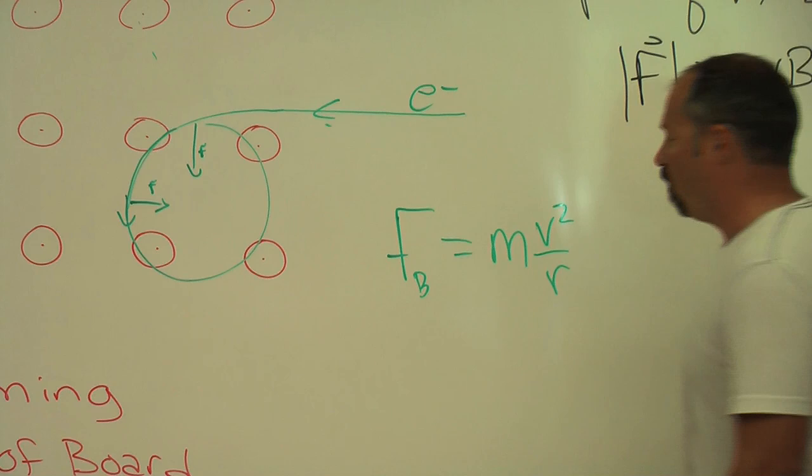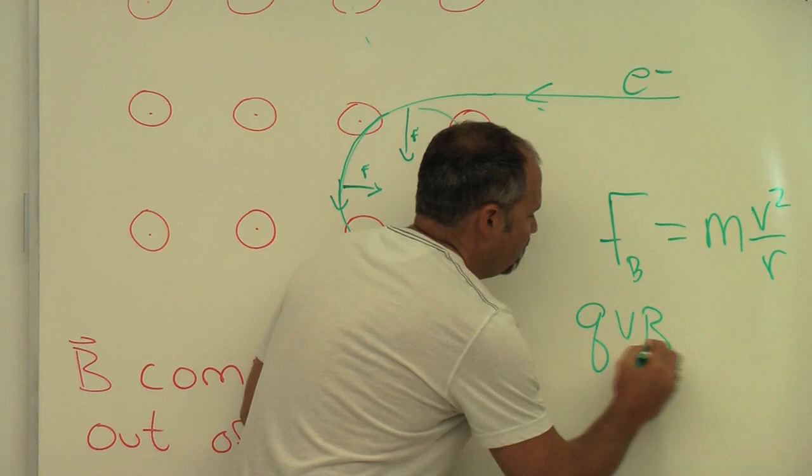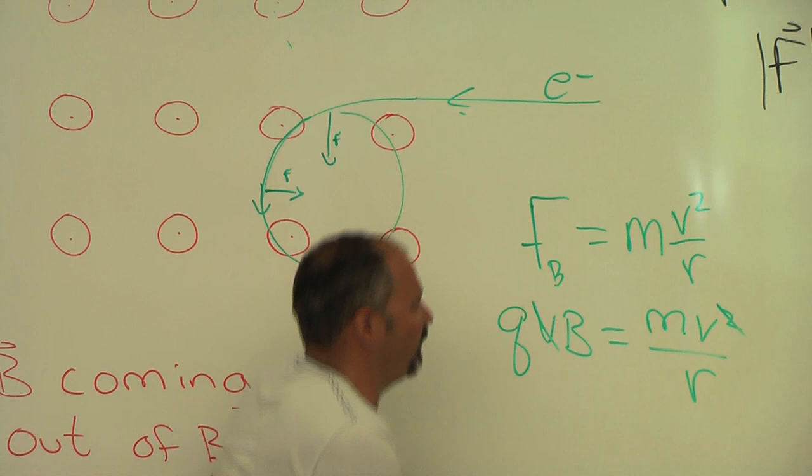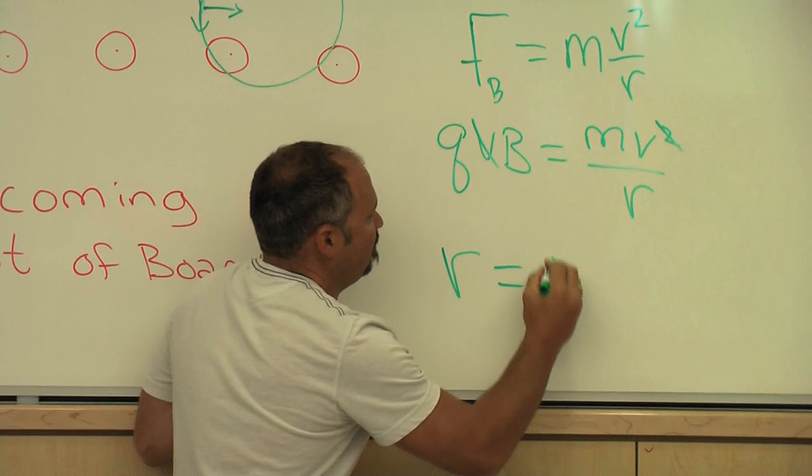And we know the magnitude of this force is QVB, and so that equals MV squared divided by the radius of this circle. We can cancel the V here, and then solve for the radius of the circle by doing a little algebra, and you would get MV divided by QB.